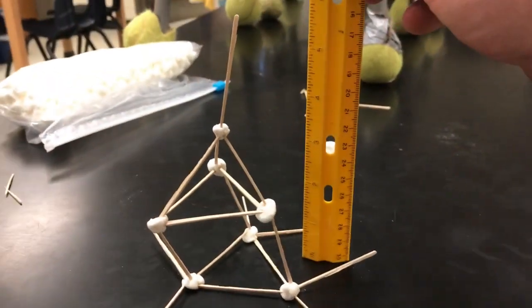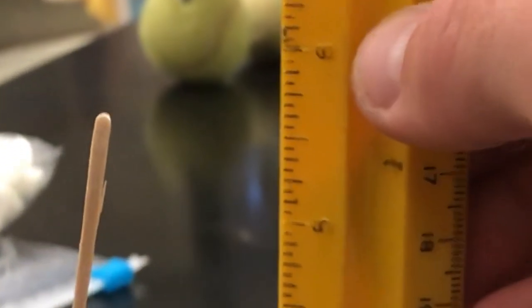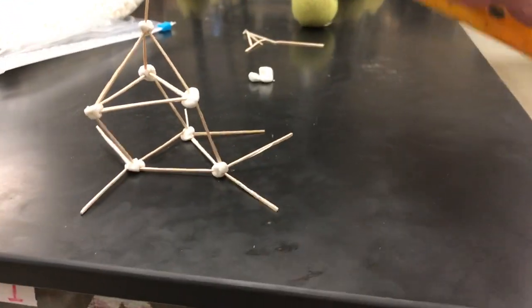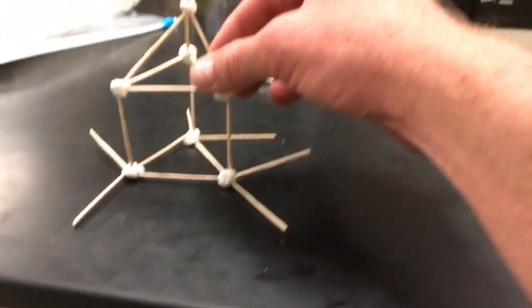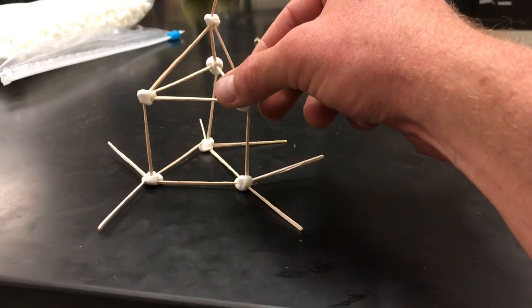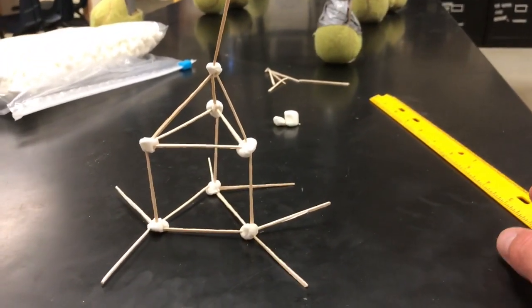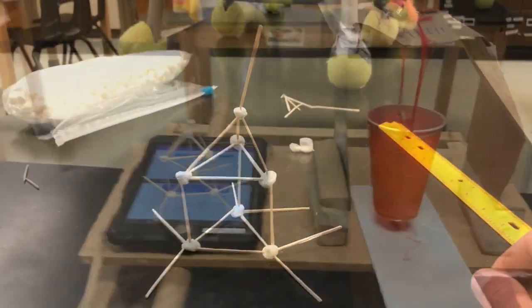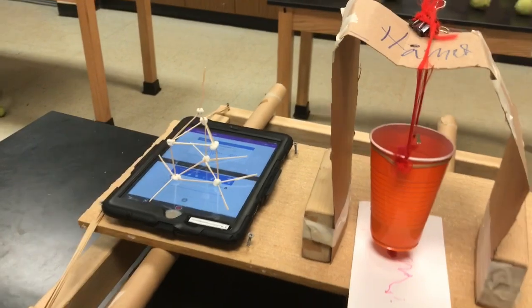Reminder, your structure needs to be at least five inches tall. Doing good there. Five marshmallows and 20 toothpicks. You do need to build it at your own table and then transport it over to the testing station. And it may not stick to the table.